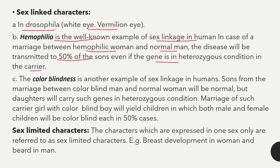Color blindness is another example of sex linkage in humans — sons from the marriage between a color-blind man and a normal woman will be normal, but daughters will carry the gene in heterozygous condition. Marriage of such a carrier girl with a color-blind boy will yield children where both male and female children will be color-blind each in 50 percent of cases.